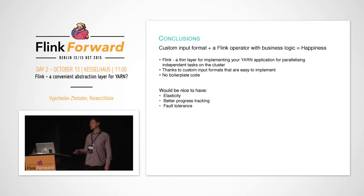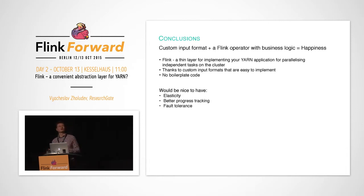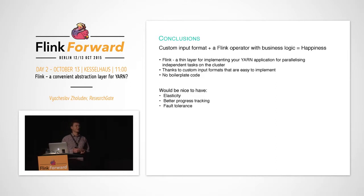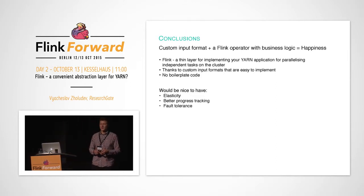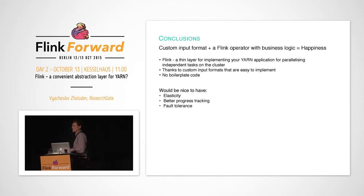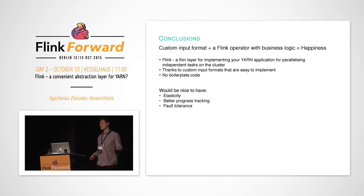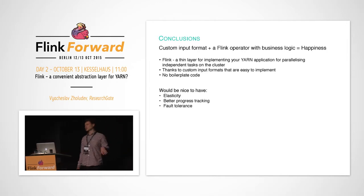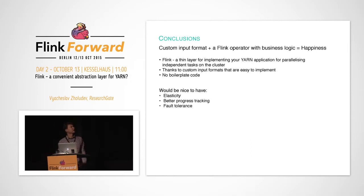Coming to conclusions: Flink was a super simple means to develop a YARN application that distributes loads for independent computational tasks across the cluster, thanks to the nice file input format interface that makes it easy to manage input splits. We didn't have to write much code — just a couple of lines to glue things together. What would be nice to have going forward: elasticity so you can run huge copy tasks without overloading the cluster; better progress tracking for records and files processed; and fault tolerance — currently if a mapper fails, you have to retry on your own.